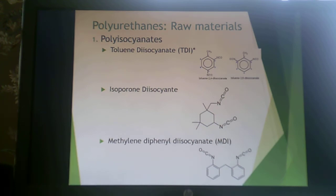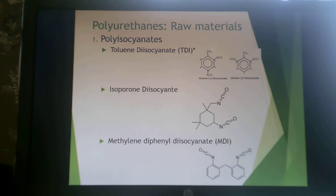TDI — toluene diisocyanate — is one of the key raw materials. It exists as a mixture of isomers: 2,4-TDI and 2,6-TDI, i.e., ortho-ortho and ortho-para configurations. Also available is isophorone diisocyanate (IPDI), which is an aliphatic cyclic isocyanate, in contrast to TDI which is aromatic. Each of these contains the NCO isocyanate groups.